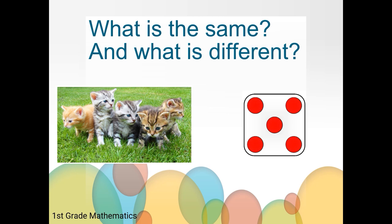One way these two pictures are different is that one picture has kittens and one picture has red dots. One way these pictures are the same is they both show the number five. There are five kittens in one picture and five dots on the other one. What other ideas did you come up with?